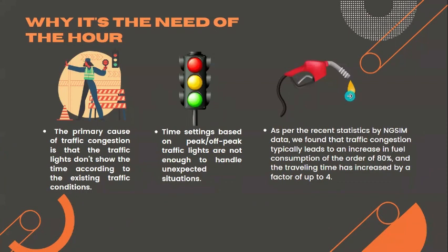To give you an overview, the aim of our project is to solve the problems related to traffic congestion and to optimize the current traffic light system. The primary cause of traffic congestion is that the traffic lights do not show the time according to the existing traffic conditions, and the time settings based on on-peak and off-peak traffic are not enough to handle unexpected situations. As per recent statistics, there is an 80% increase in fuel consumption because of traffic congestion.